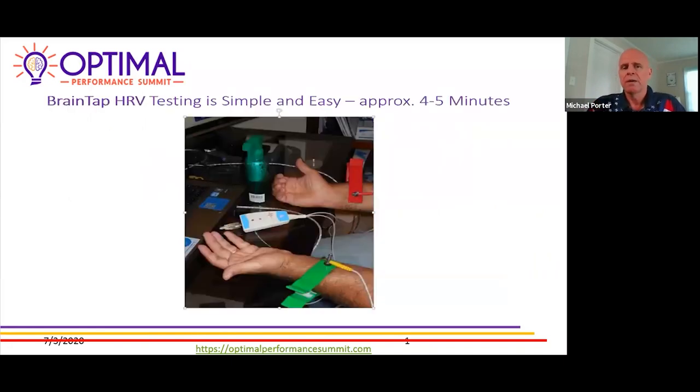Stress is probably the root cause of 70 to 90% of the chronic illness. And what we found with this is a lot of times when things are invisible, this makes it visible. So that's what we're going to show today, the power of the BrainTap, pre and post. The BrainTap HRV is a simple, easy test. It takes four or five minutes. And you can see by this diagram, one goes on the right wrist, the other goes on the left. All we need is 300 heartbeats.